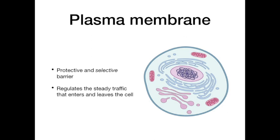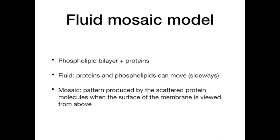Now we're going to describe the structure of the plasma membrane. In 1972, two scientists, Singer and Nicholson, used all available evidence to put forward a hypothesis for membrane structure called the fluid mosaic model. This model describes the structure of the membrane. We know that the membrane consists of a phospholipid bilayer plus proteins.